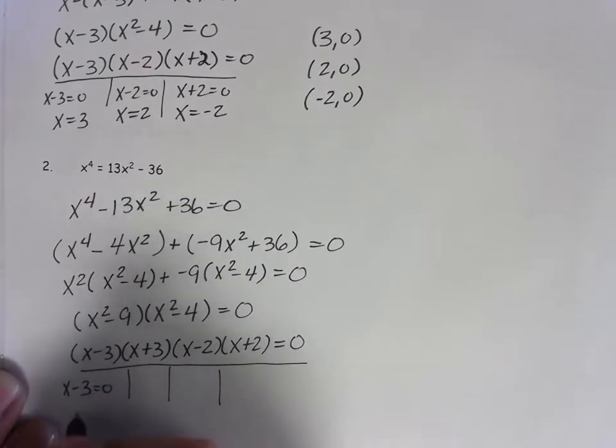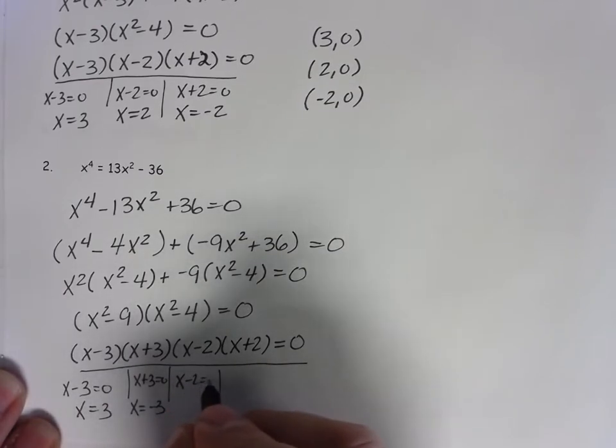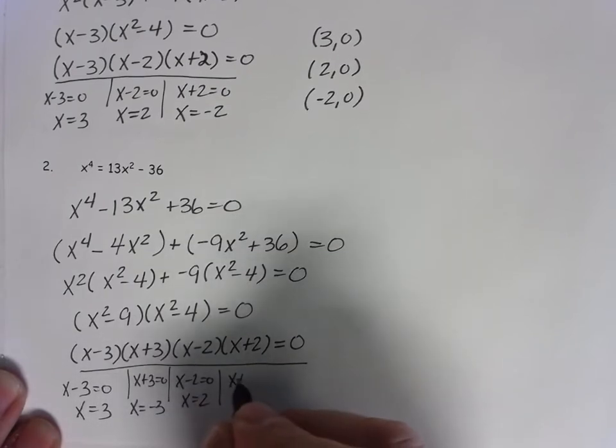x minus 3 equals 0 means x is 3. x plus 3 is 0, meaning x is negative 3. x minus 2 is 0, giving me x is 2. x plus 2 is 0, giving me x is negative 2.